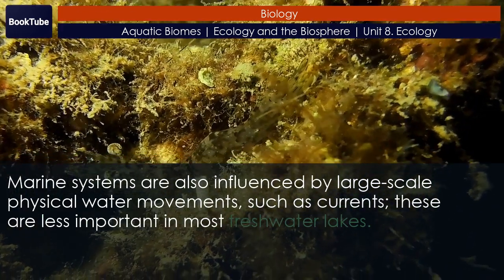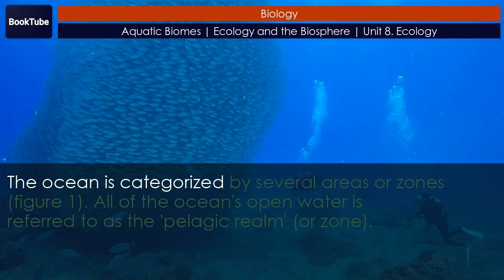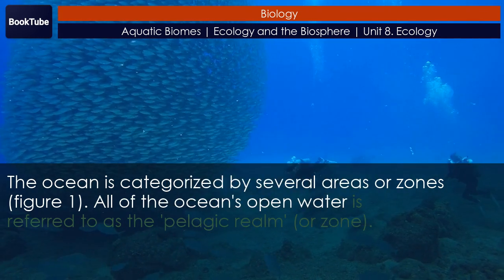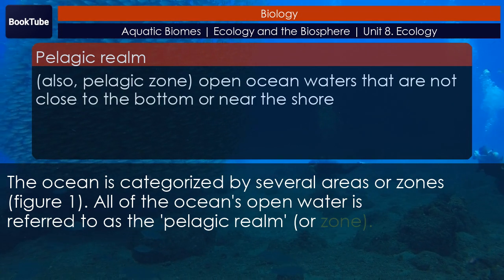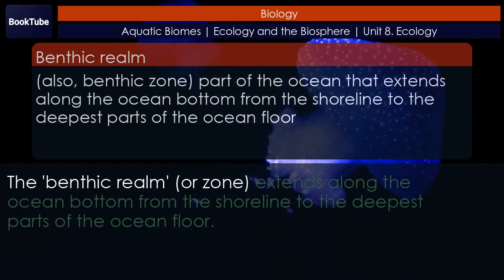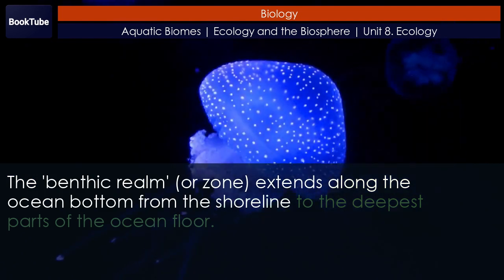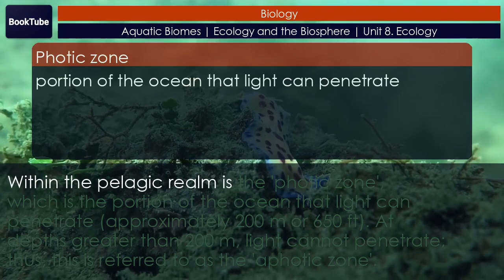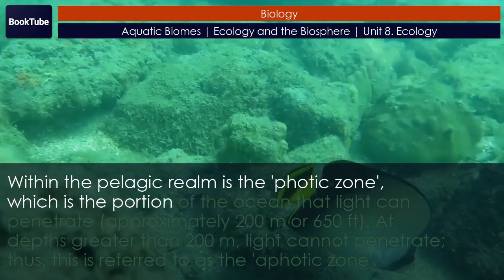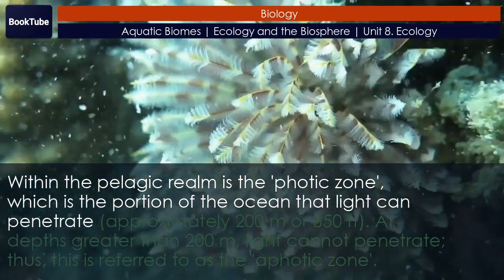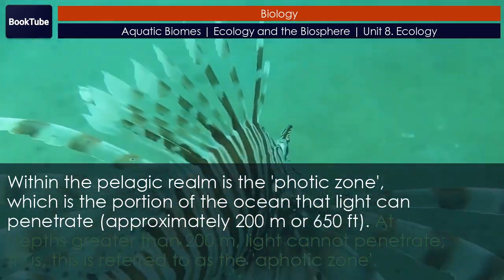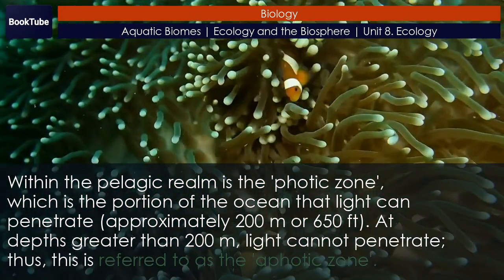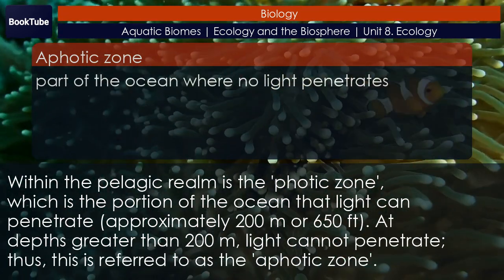The ocean is categorized by several areas or zones. All of the ocean's open water is referred to as the pelagic realm or zone. The benthic realm or zone extends along the ocean bottom from the shoreline to the deepest parts of the ocean floor. Within the pelagic realm is the photic zone, which is the portion of the ocean that light can penetrate — approximately 200 meters or 650 feet. At depths greater than 200 meters, light cannot penetrate; this is referred to as the aphotic zone.